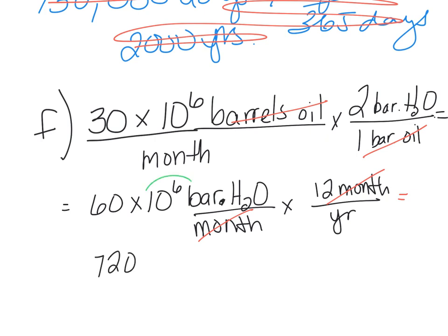Do not forget this. So many students forget that part right there. So they just write 720 barrels of water per year. But it's 720 million barrels of water, which is H2O per year.